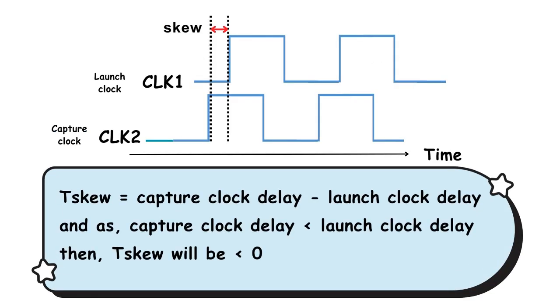So according to the skew equation, and as capture clock delay is smaller than launch clock delay, then t_skew will be smaller than zero, results in a negative skew.